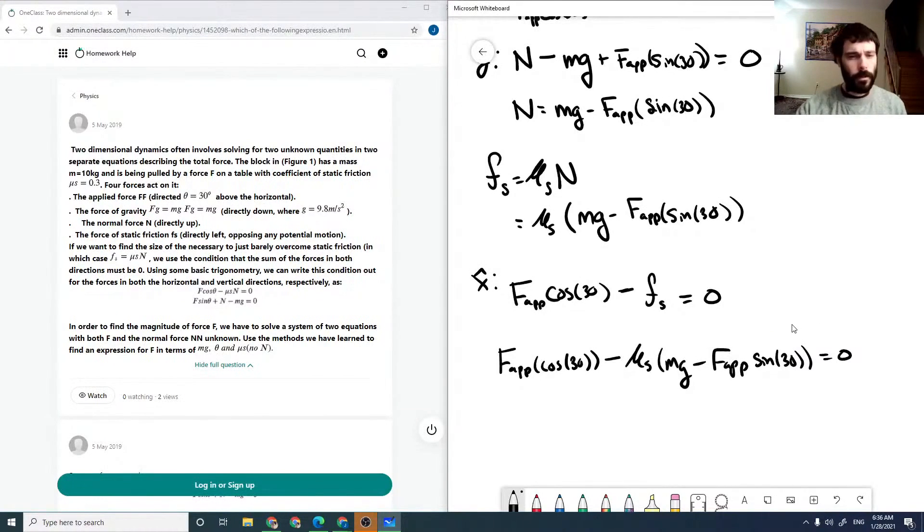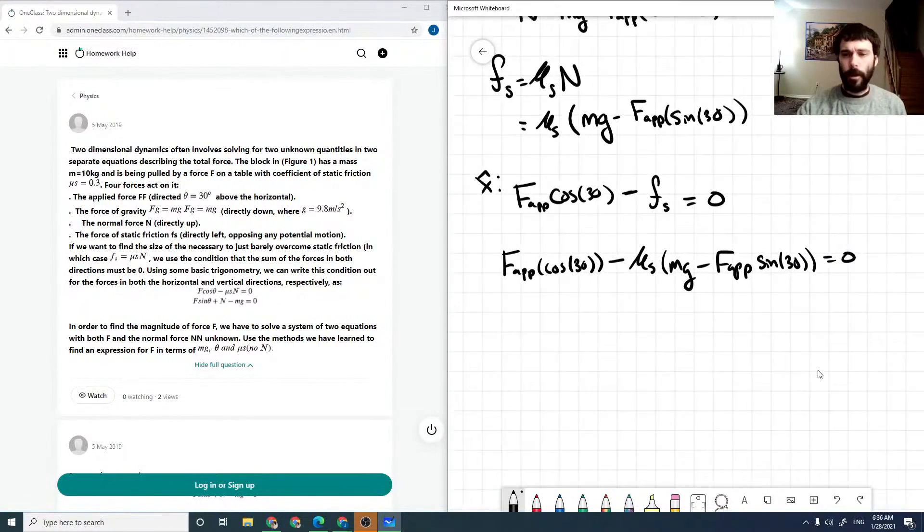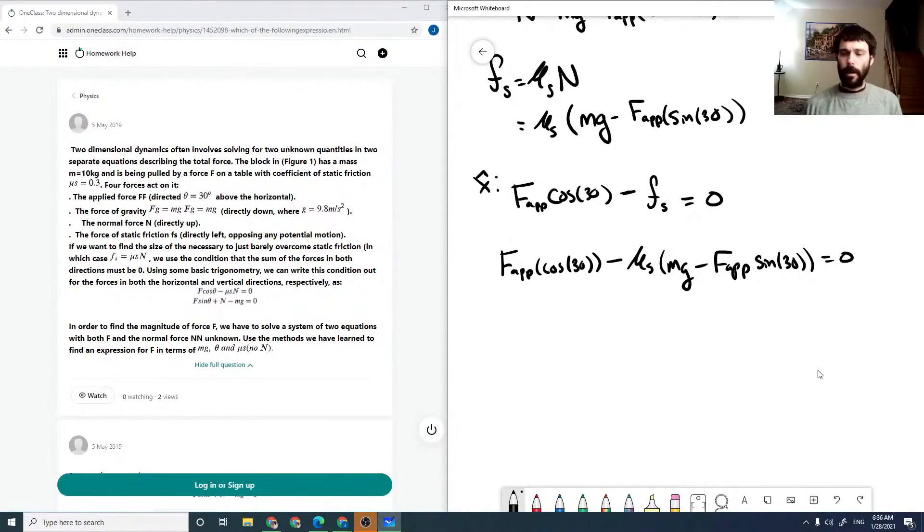So we're looking for our applied force such that we just overcome our static friction. So that will be the solution to this equation. So now we need to collect terms here. So we've got F_applied cosine of 30 plus mu_s sine 30...